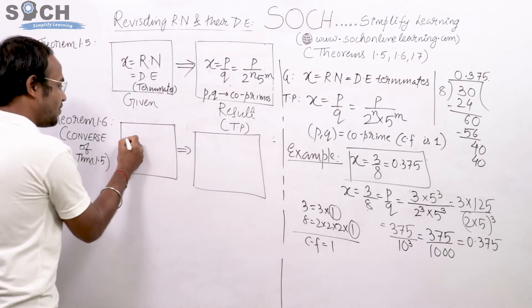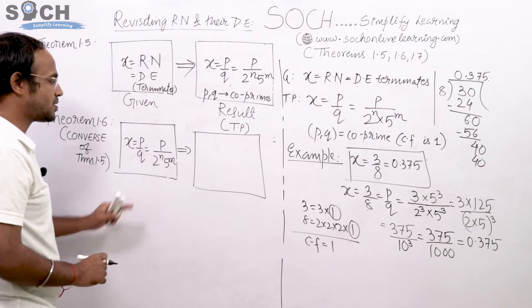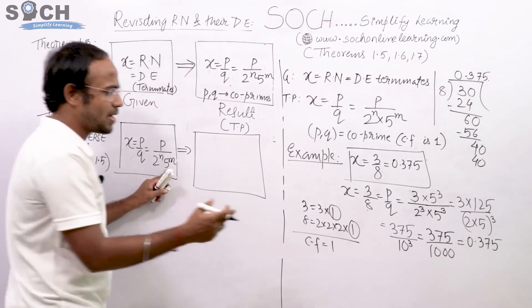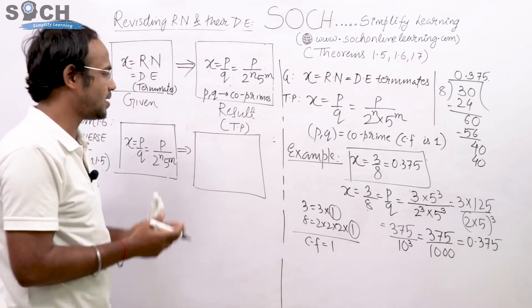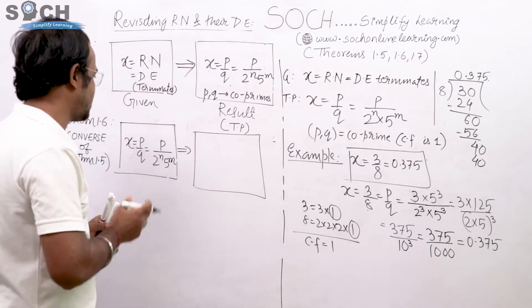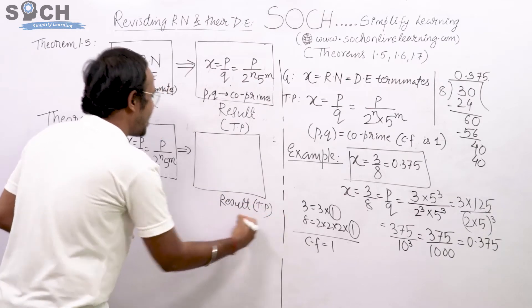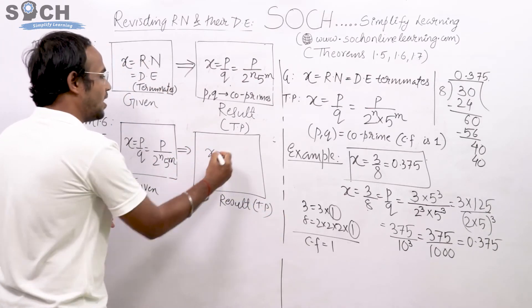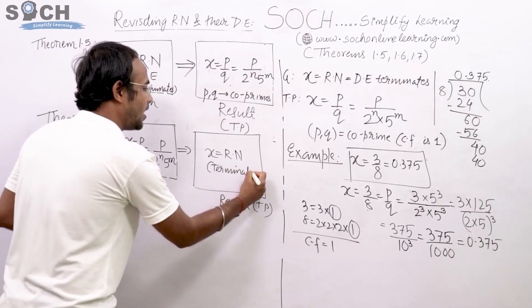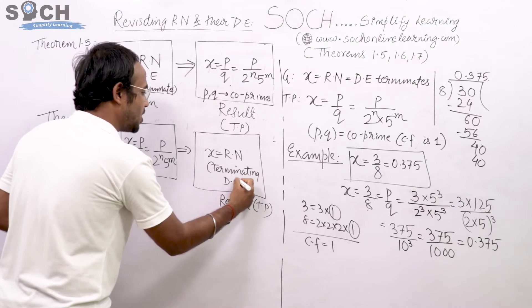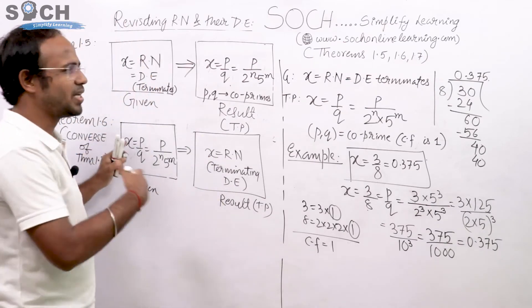If I swap the boxes, what will happen? Here we have been given X equal to P by Q where Q is of the form 2 raised to N and 5 raised to M. Try to understand, what is the beauty of this form? 2, 5 is 10, and 10 multiplied always terminates the fraction. This is what is given. And the result would be so simple. The result will be to prove that X is nothing but a rational number having terminating decimal expansion. This is theorem 1.6 within no time.